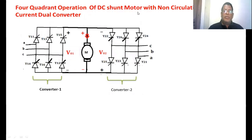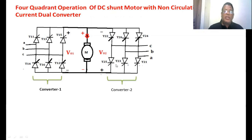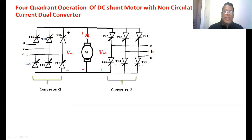For the four quadrant operation of a DC shunt motor using a non-circulating current dual converter, we use two three-phase fully controlled converters. Converter 1 has firing angle alpha 1 and Converter 2 has firing angle alpha 2. Both are connected anti-parallel to the armature of the DC motor. The positive direction of load current and output voltage are indicated; the terminals of Converter 1 (positive upper, negative lower) are shown in red.